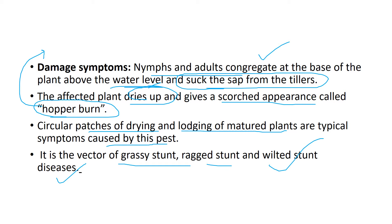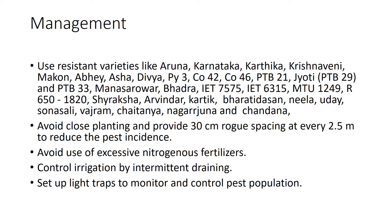BPH is also a vector of grassy stunt, ragged stunt, and wilted diseases. This is the most crucial part of your preparation — if you can remember the damage symptoms, you can get nearly half the marks for the questions. Please be focused on the damage symptoms because this is where all the species differ and vary.